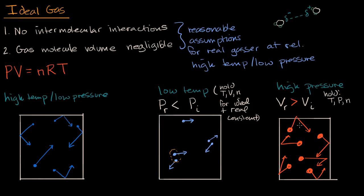The whole takeaway: ideal gas assumptions and the ideal gas law are reasonable for most gases at high temperature and low pressure. But at low temperature or high pressure, things start to break down, as molecules interact more strongly and approach the condensation point.